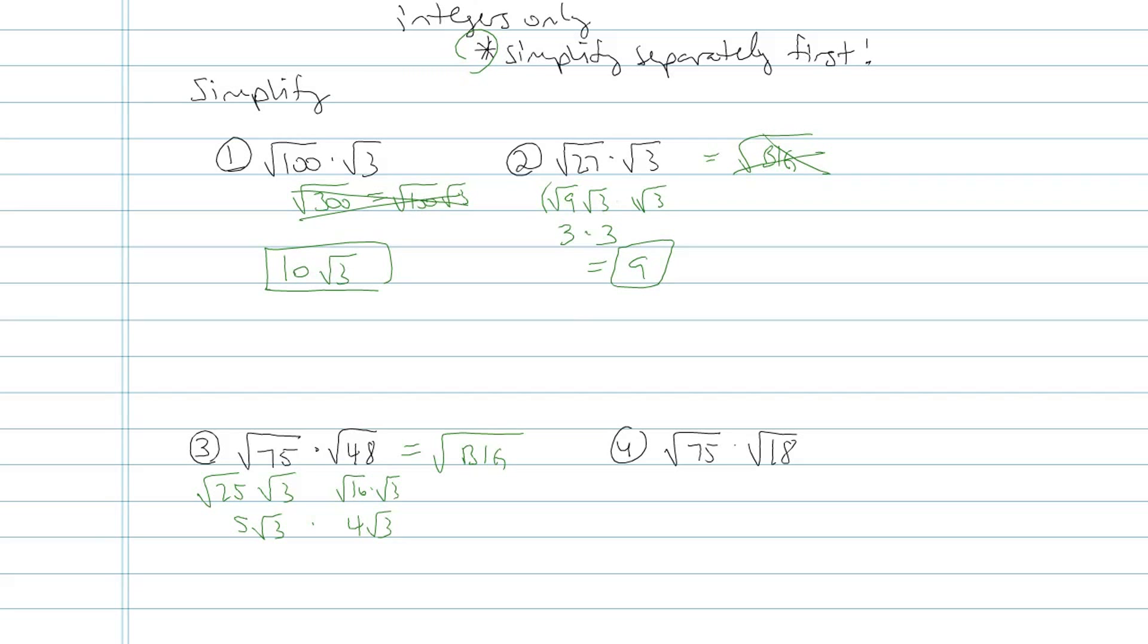So what I have now is 5 root of 3 times 4 root of 3. And the way I'll work with that, the way I'll simplify it, is do the 5 times 4 first, that's 20. And then root 3 times root 3, you could think of that as root 9, or just plain old regular 3. My final result there is going to be 60.